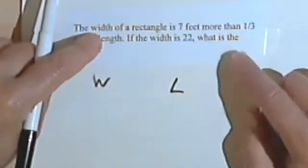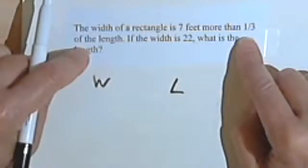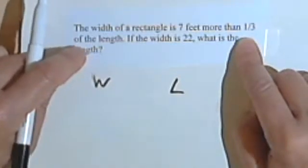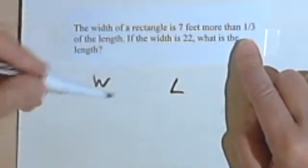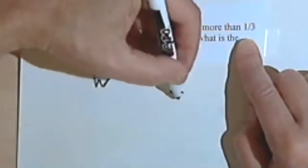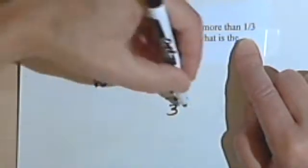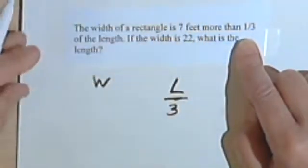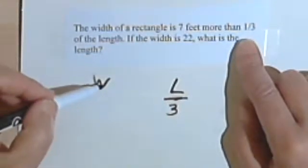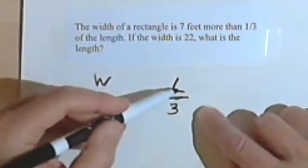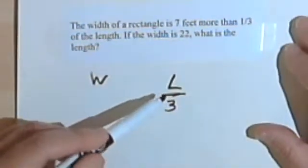And it says the width is seven feet more than one-third of the length. So I think the first thing I want to do is figure out what one-third of the length would be. So if L is the length, one-third of the length would be the length divided by 3, or L over 3. And it says the width is seven feet more than that, than the length over 3.